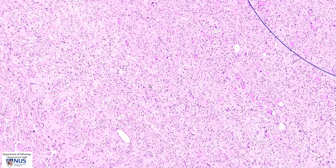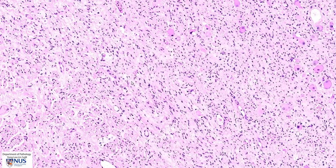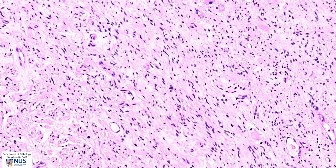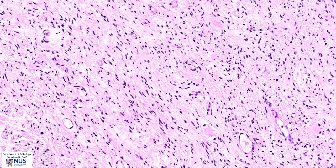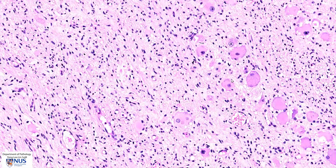In summary, this is an example of a ganglioneuroma showing the neuroma component, which is composed of spindle, elongated slender Schwann cells arranged in parallel bundles or fascicles, and also ganglion cells, which are very obvious because they are large polygonal, have abundant cytoplasm, and large round nuclei. This is a benign neoplasm.